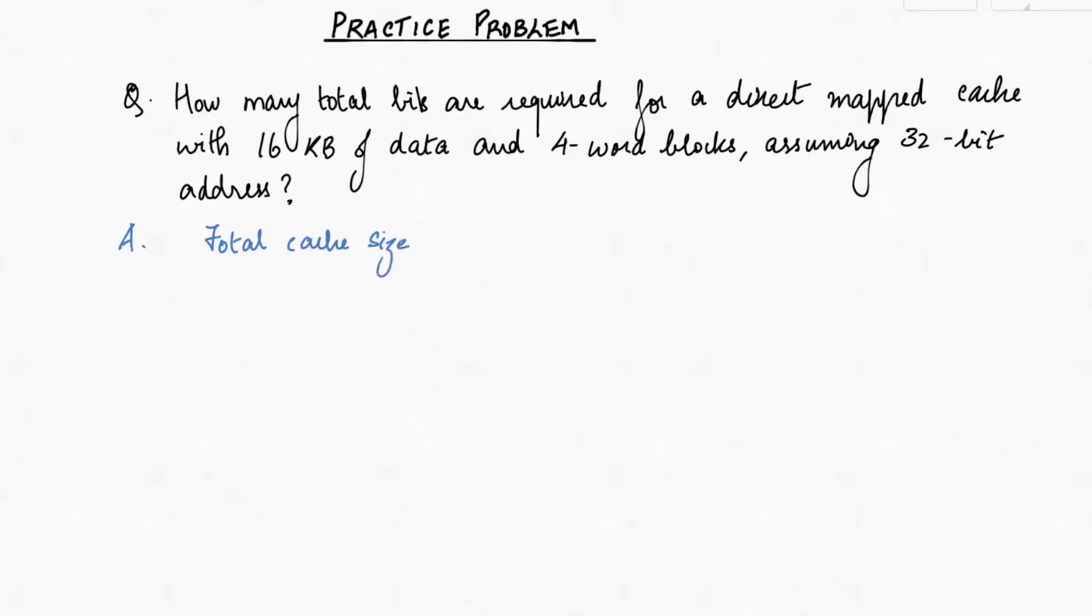Let's first write the formula to calculate the size of a cache. The number of bits in a cache is equal to 2 to the power n, multiplied by the sum of the block size, tag size, and valid field size.